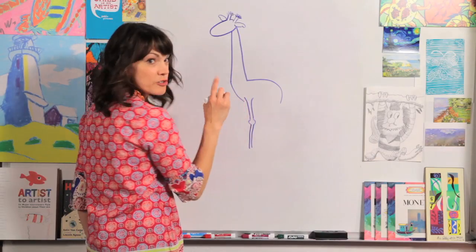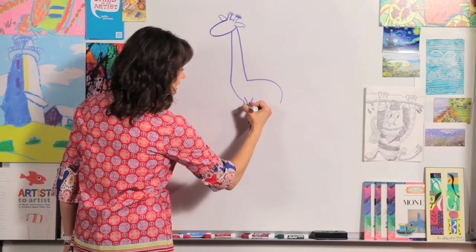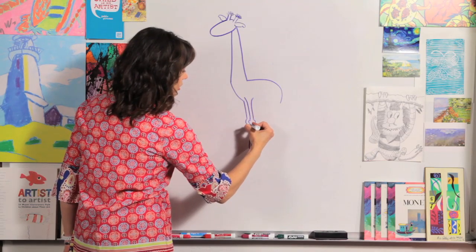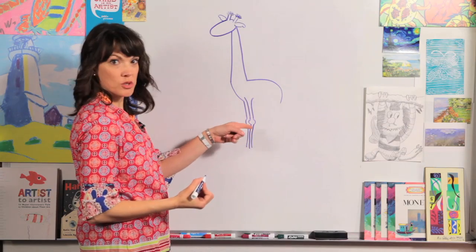Now this leg is right next to it, so we only have to draw one side of it. We're just going to come down, curve, and down. And now we have two legs there.